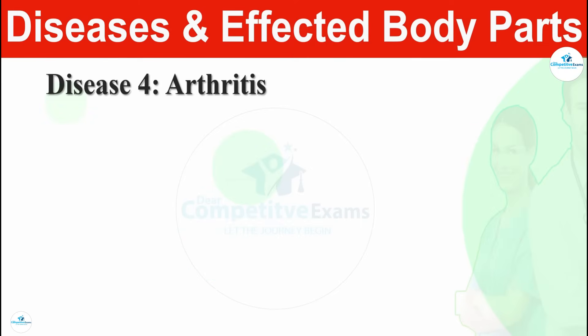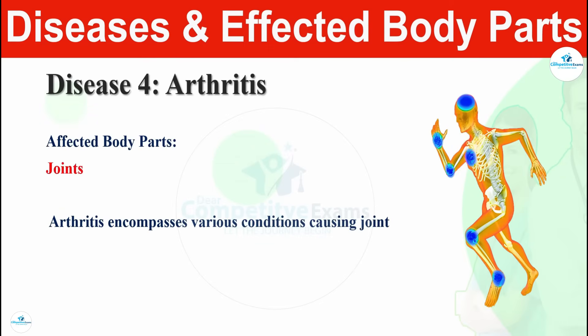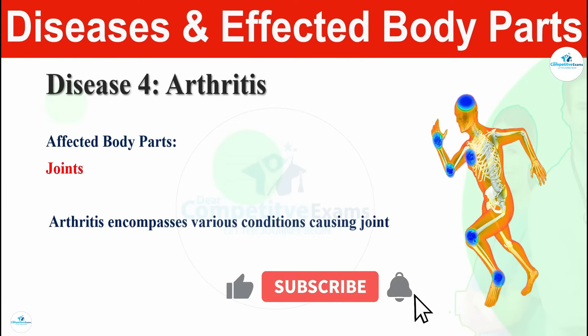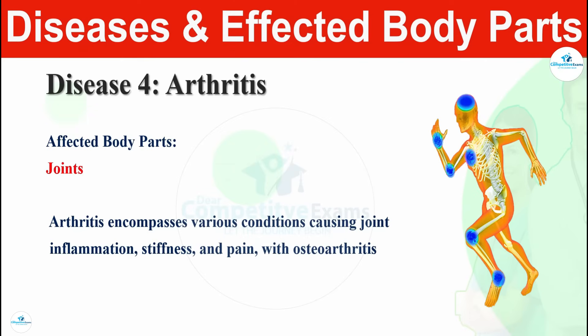Alzheimer's disease affects the brain and leads to problems in memory, thinking, and behavior. Disease number four is arthritis, which affects the joints. Arthritis encompasses various conditions causing joint inflammation, stiffness, and pain. Osteoarthritis is very common nowadays. Arthritis affects the joints and leads to inflammation, stiffness, and pain.